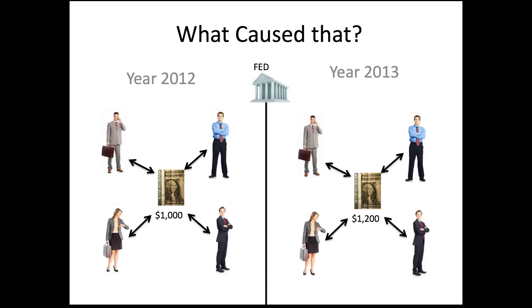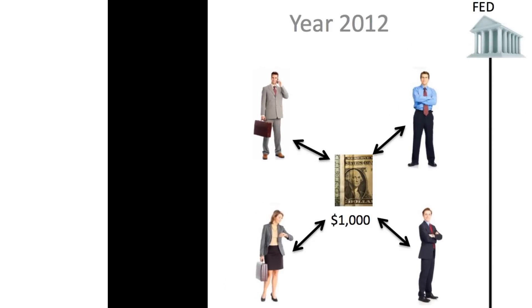So what caused the price of milk to go from $4 to $4.12? Let's look at year 2012. We have four people — symbolically representing everyone across the country — and the federal government has put $1,000 into this system for them to use to trade amongst each other. That money is just a symbol of their work, and they can trade it as they need, whether for food, clothes, transportation, or whatever.